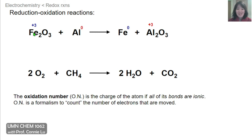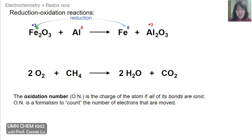Keep in mind that oxidation number is just a formalism to help us identify the reducing and oxidizing agents. In the thermite reaction, it's the iron and aluminum atoms that change oxidation numbers. Iron in iron oxide has an oxidation number of +3, and as it turns into iron metal, that oxidation number goes to zero. Aluminum does the opposite: aluminum metal has an oxidation number of zero, but aluminum inside aluminum oxide has an oxidation number of +3.